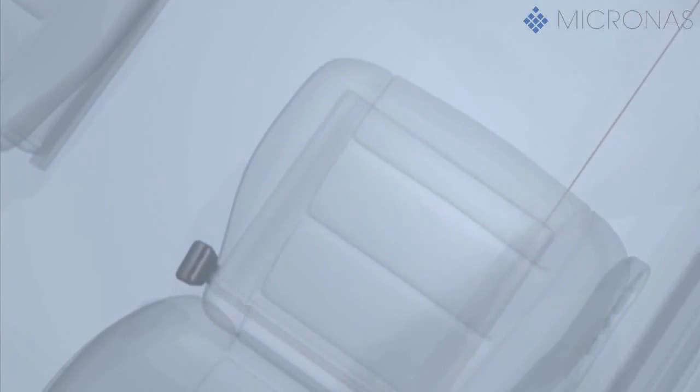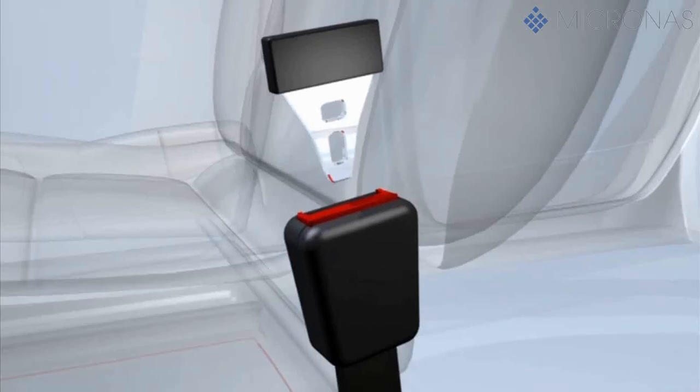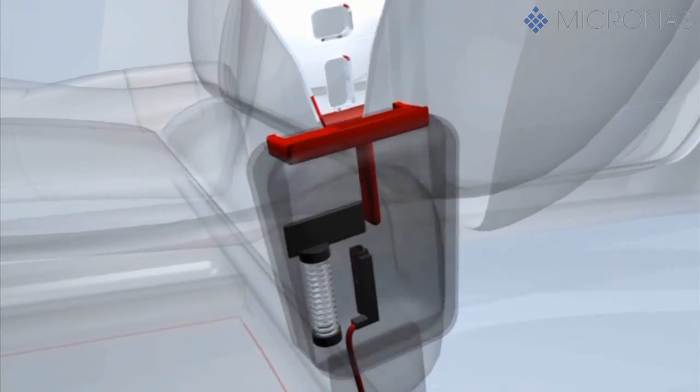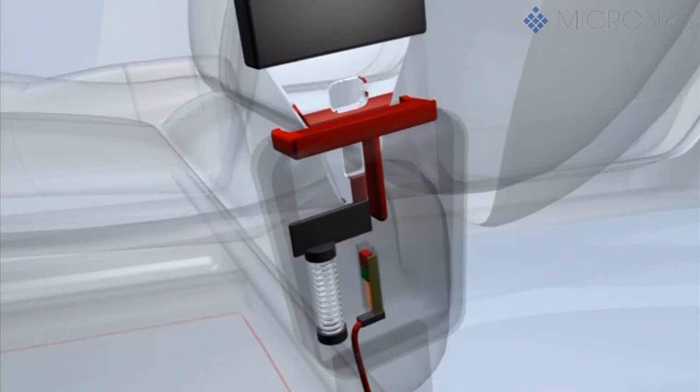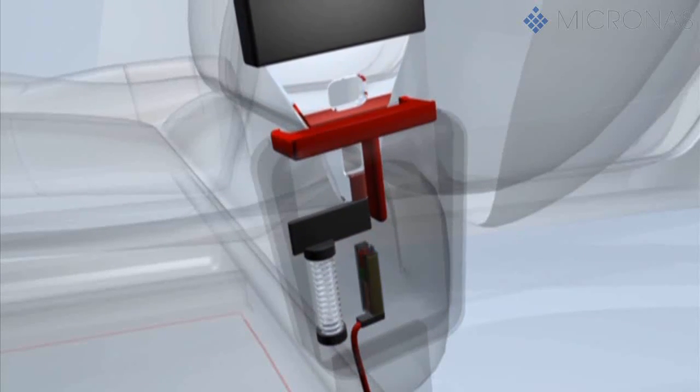A seat belt lock sensor application may be realized as follows. When the seat belt is applied, the lug of the belt is pushed into the belt lock. The lug moves a spring-loaded plastic element which in turn moves a magnet.